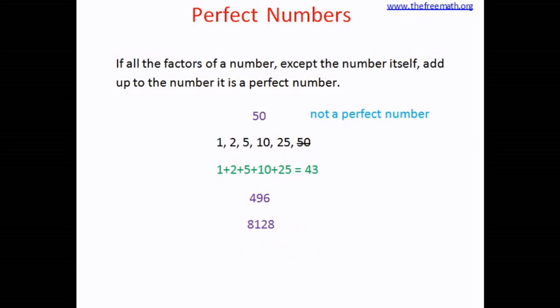So who has come up with these perfect numbers? There was an ancient Greek mathematician. His name was Euclid. He came up with this idea of perfect numbers.